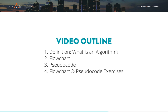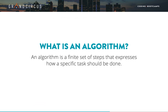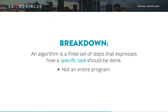Let's jump right in with the definition. An algorithm is a finite set of steps that expresses how a specific task should be done. An algorithm is for a specific task — it is not an entire program. It's going to be focused on just one task in a program, such as calculating a total or finding the top rated blog posts.